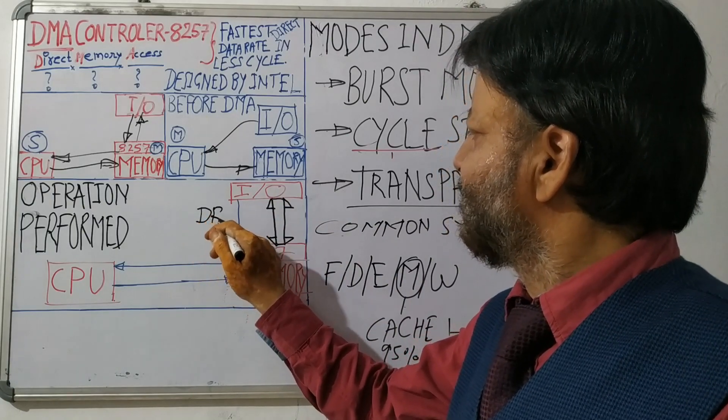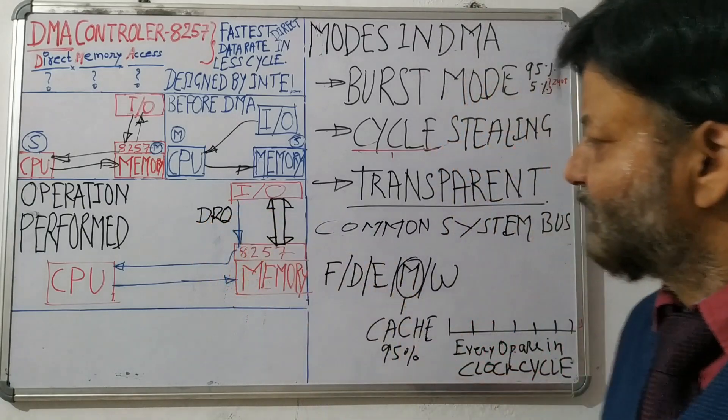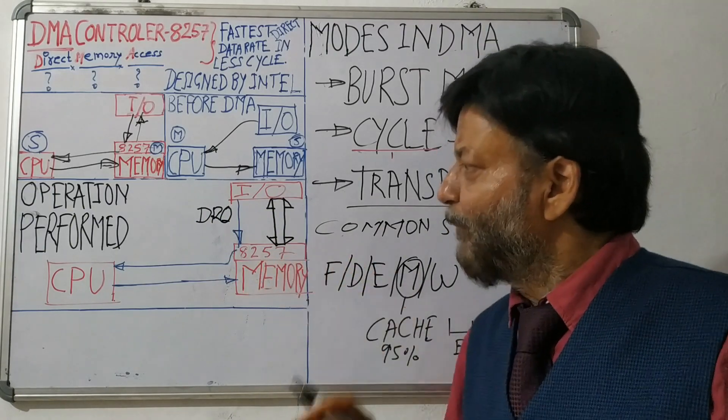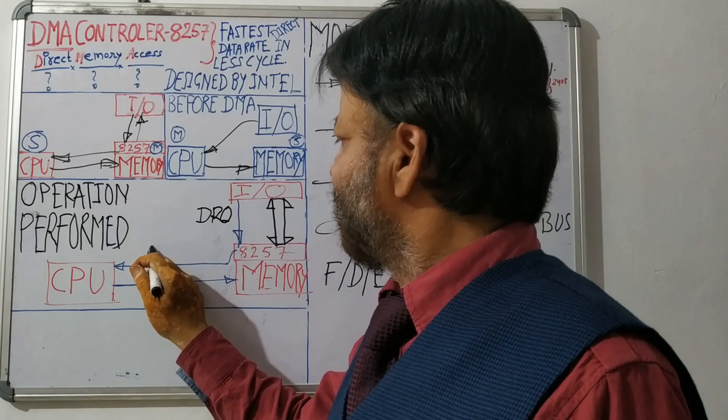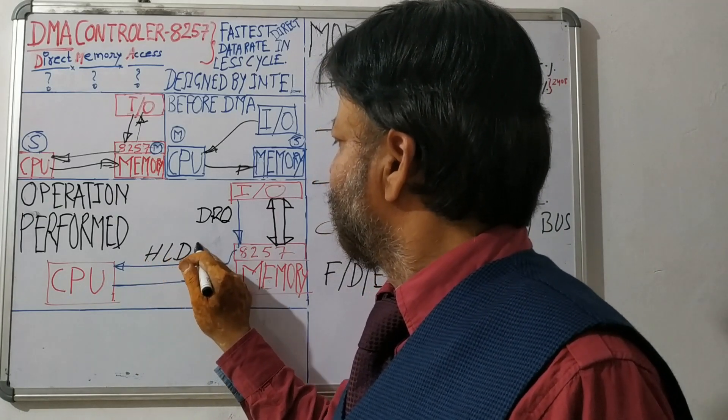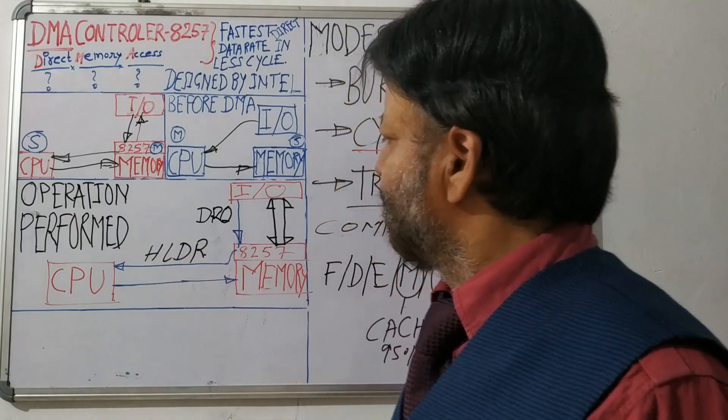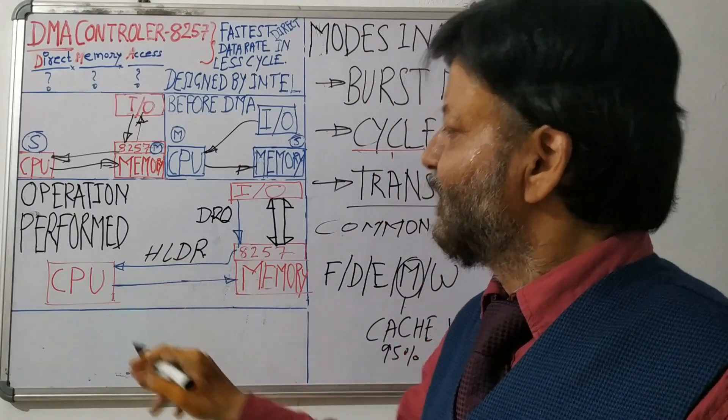What IO will do? IO will send a DRQ request. So it is DRQ request. It sends the DRQ request to DMA. Now what DMA will do? DMA will send HLD request.